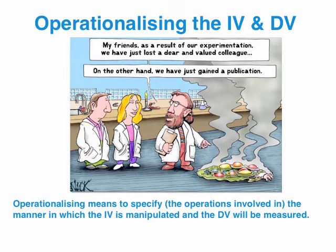Then we're going to specify exactly how we're going to measure the DV. Before the experiment, we might get students to do a standard anxiety test — you can find them on the internet. Then we're going to get them to do a similar test at the end of the 10-week experiment, and we're going to compare scores both pre- and post-experiment. So our DV in that case is going to be the change in their anxiety scores out of 100 on the specified test.